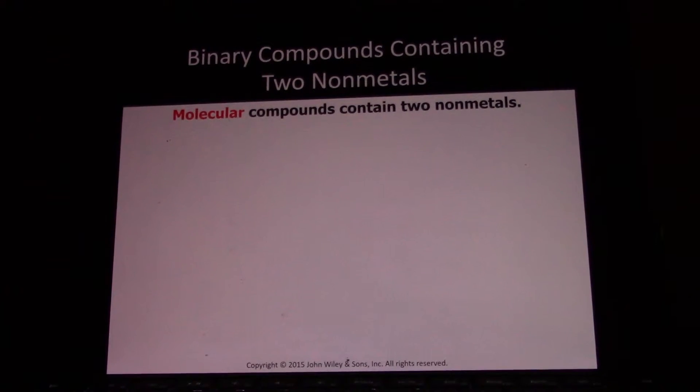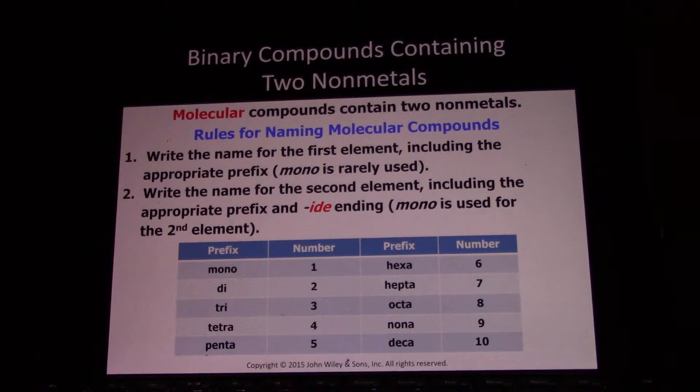That covers ionic compounds. Now let's move to molecular compounds. There are no charges here. With ionic compounds, we knew how many of each anion and cation we needed because the charges had to neutralize. Since you don't have that as a guiding principle here, we're going to use Greek prefixes to state how many of each element there should be.